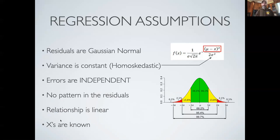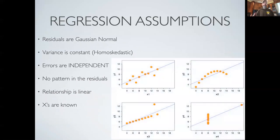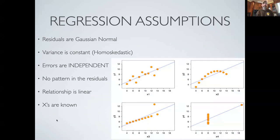These are key assumptions — all of them can be violated, and there are ways of addressing those violations in all of them. A useful thing here is to come back to Anscombe's Quartet and think about the patterns we see in those classic examples and how they relate to these regression assumptions.